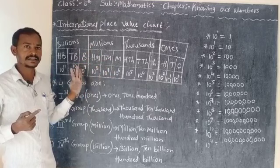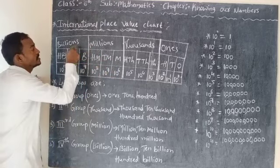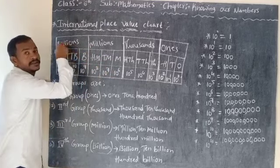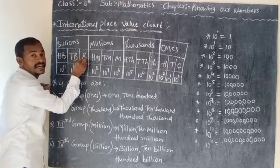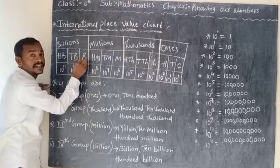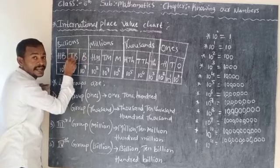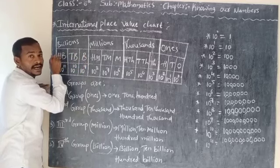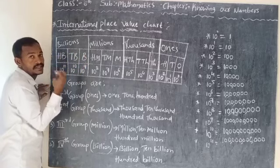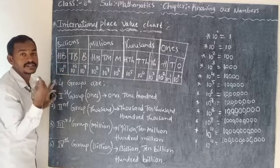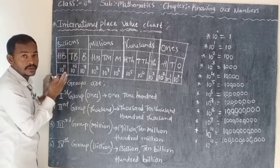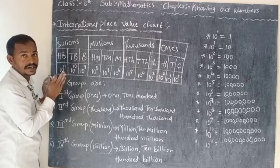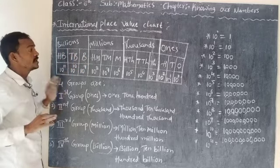The billions group also has 3 places: 1 billion, 10 billion, 100 billion — same pronunciation pattern. After this we will do conversions.